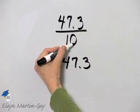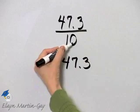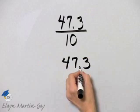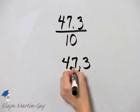However many zeros there are in the power of 10, in this case 1, that's how many decimal places the decimal point will move to the left.